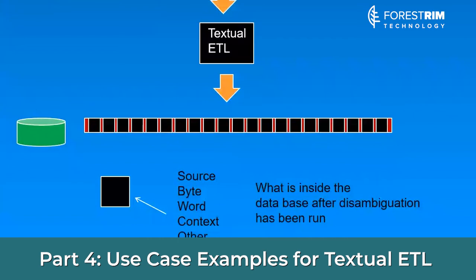Let's talk about why we have these pieces of data in our database record. We need source because if someone looks at the contents of the database and asks where a word came from, we need to be able to prove it and go back to the original source document. We need byte because on occasion we need to keep words and analyze them in the proper sequence in which they occurred in the document.